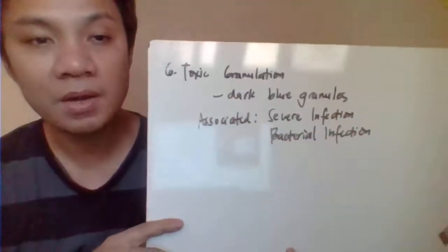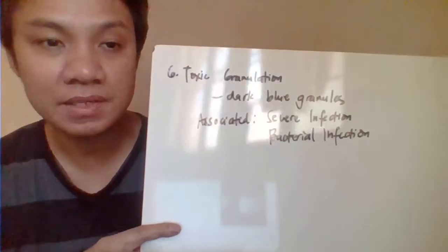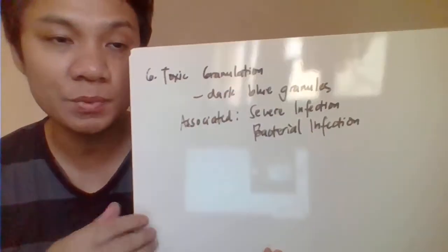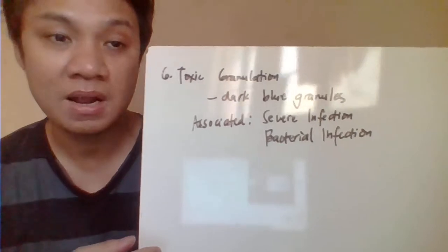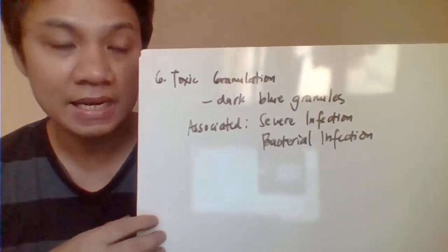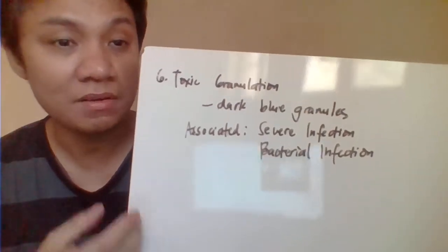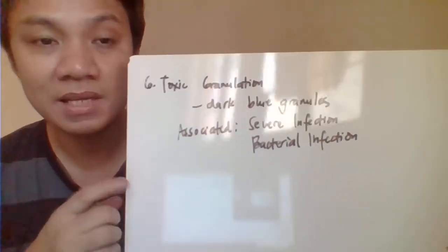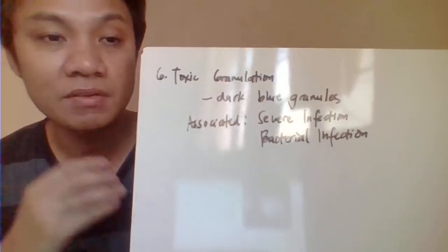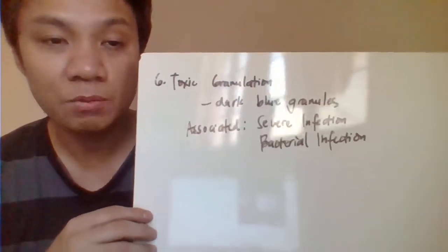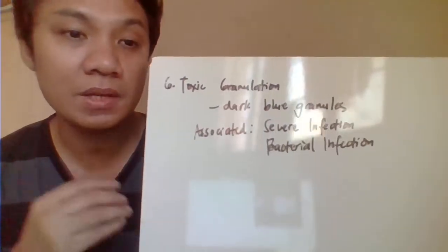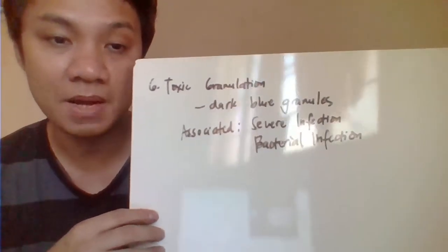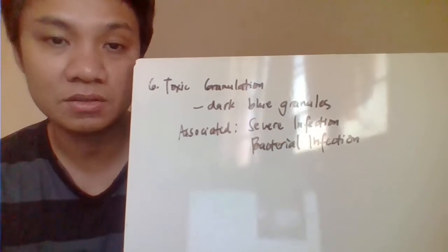Another anomaly is toxic granulation, characterized by dark blue granules which resemble the Alder-Reilly anomaly in terms of morphology. But in this case, toxic granulation shows very prominent granules that are associated with severe infection or bacterial infection.